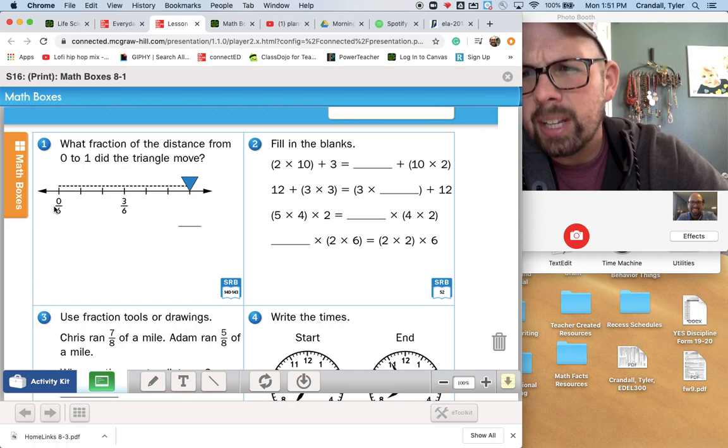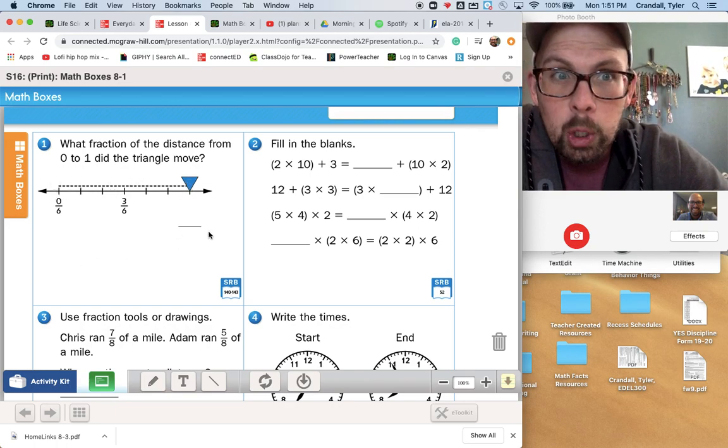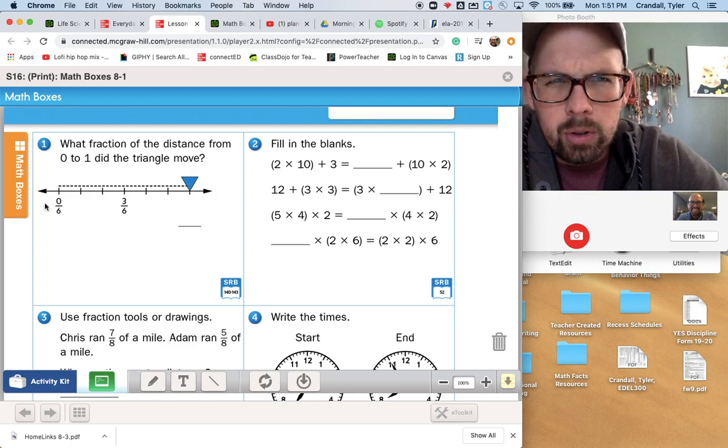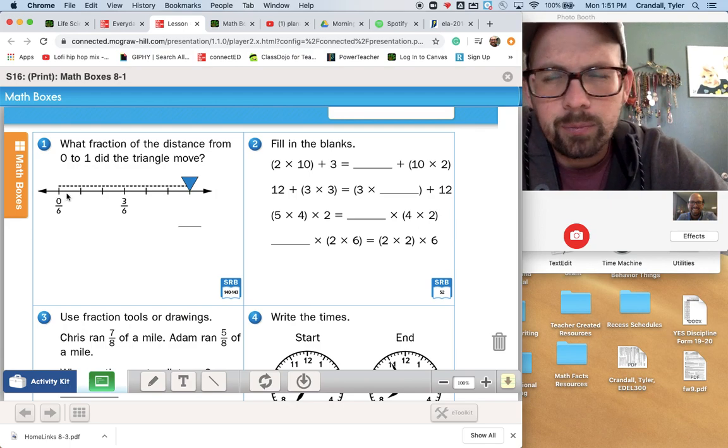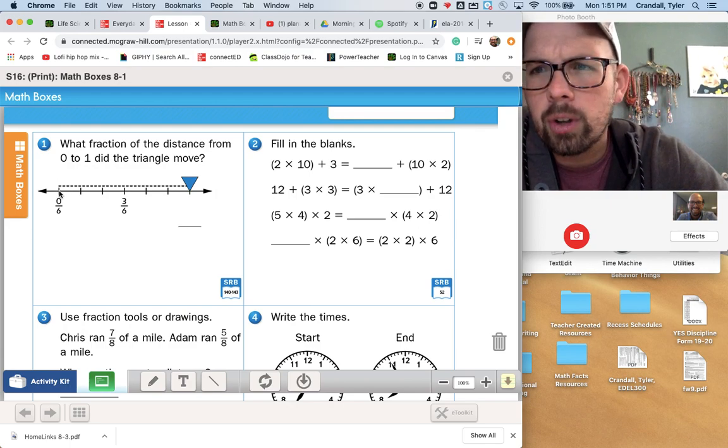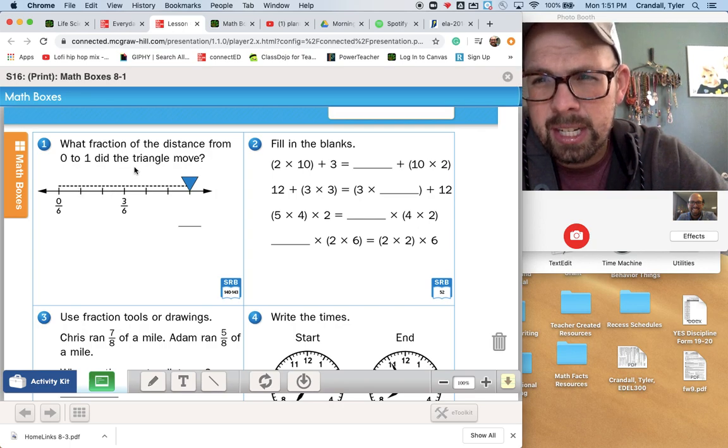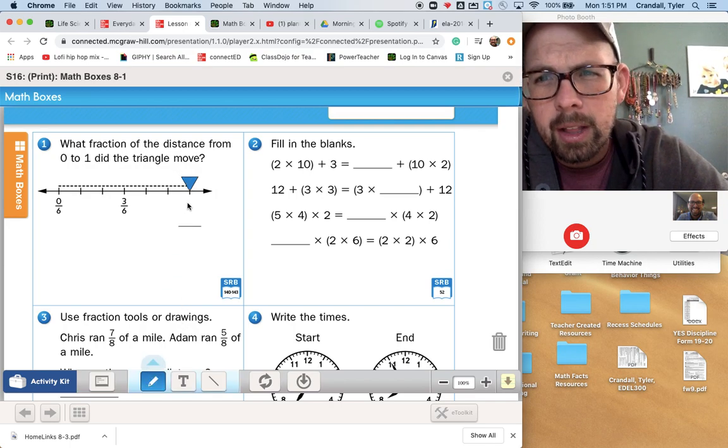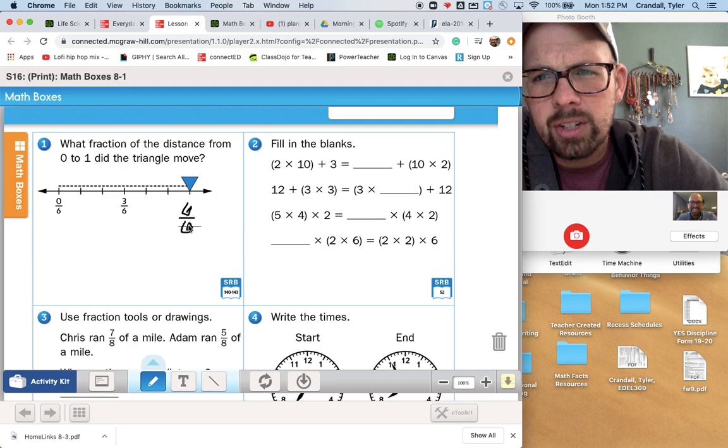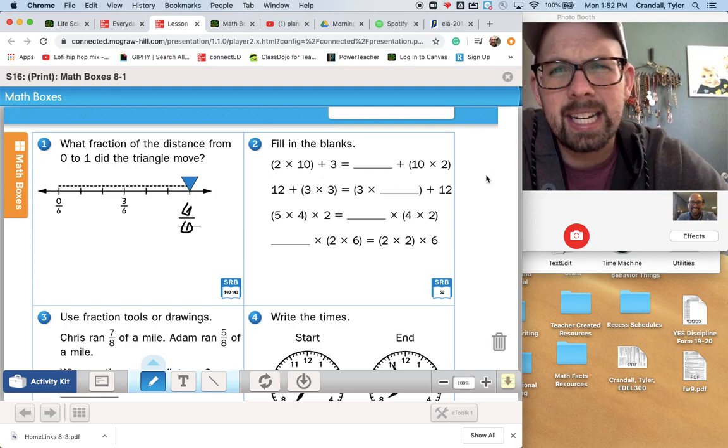So what fraction of the distance from 0 to 1 did the triangle move? It went from 0 sixths all the way down to here. I'm tempted to say it went the whole way, from 0 to 1, but I want to just check it by counting by sixths. So 0 sixths to 1 sixth, 2 sixths, 3 sixths, 4 sixths, 5 sixths, and 6 sixths. So it went the whole way. It went 6 sixths.